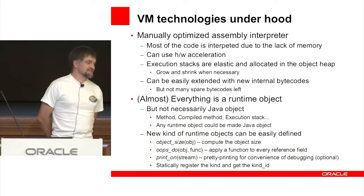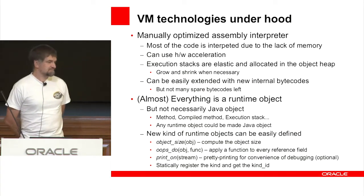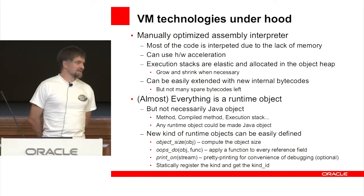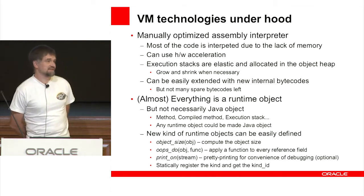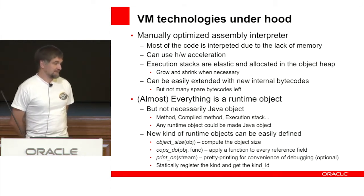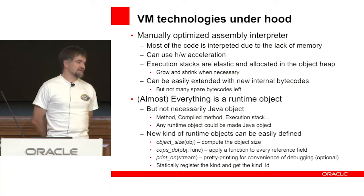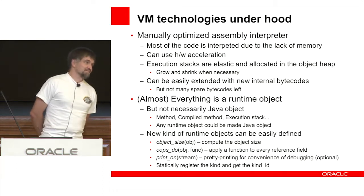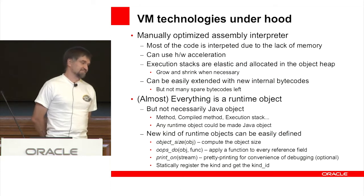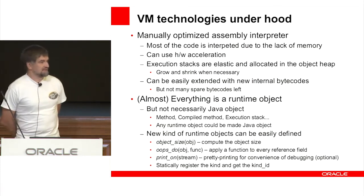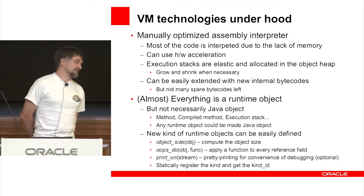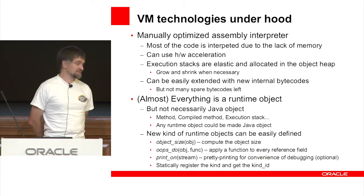Almost everything in this runtime is a runtime object, though not necessarily a Java object. Examples of runtime objects that are not Java objects include method, compiled method, and execution stack. Any runtime object can be made a Java object if necessary, but there are no Java APIs for that, so they remain just runtime objects.